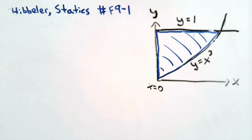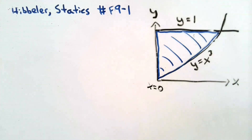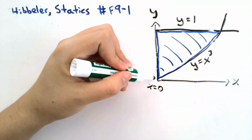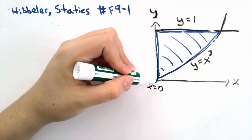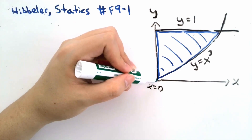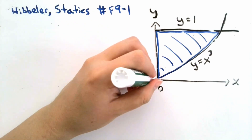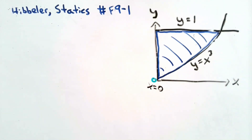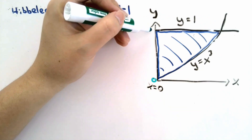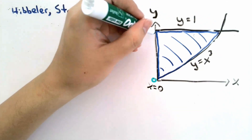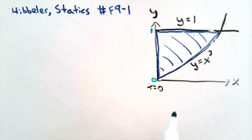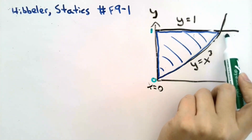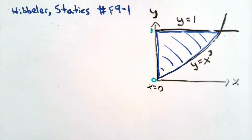In order to find the centroid of this area, we need to do a little bit of integration. If this area were simply a rectangular or triangular shape, then we could find the centroid quite easily. However, this is not the case for our problem. So the first thing we want to do is figure out what our limits are. We know that the area starts at the intersection between x equals 0, y equals 1, and y equals x cubed.